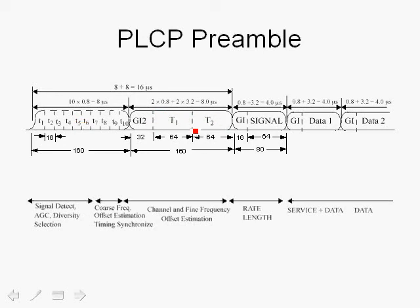The long symbols play a very important role. They are used to compute the fine carrier frequency offset estimation and to perform fine carrier frequency offset correction in the baseband. The long symbols are also used to estimate the channel and supply that information to the equalizer following the FFT. So the PLCP preamble is critical for acquisition: automatic gain control, signal detection, reliable packet detection, coarse frequency offset estimation and correction, and fine carrier offset estimation, correction, and channel estimation and equalization.